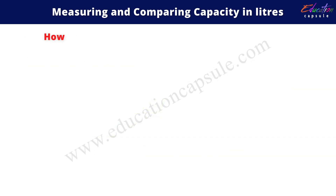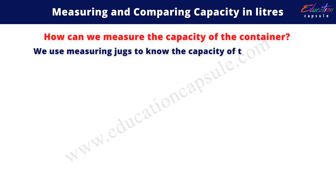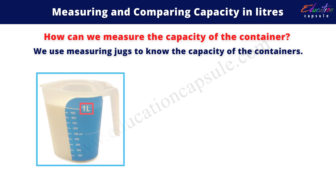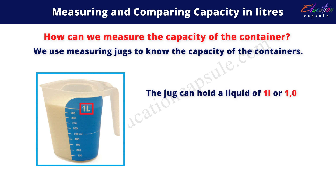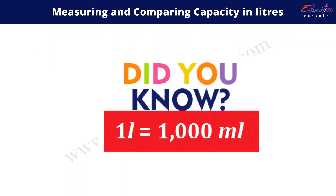Now, how can we measure the capacity of a container? We use measuring jugs to know the capacity of containers, as shown here in this example. The jug can hold a liquid of one liter or one thousand milliliters. Did you know that one liter is equal to one thousand milliliters?